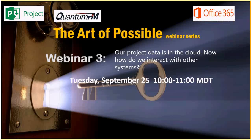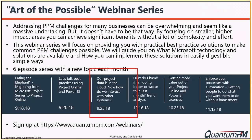We'll talk about the methods and hows of how to actually go about implementing, some considerations, and we'll talk about the importance of business rules and things of that sort. So thank you for attending today. Today is the third episode of our Art of the Possible webinar series. This is a six-part series that focuses on key challenges faced within the PPM and Microsoft stack.